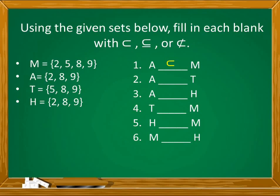Number 2, set A blank set T. Checking the elements of set A — 2, 8, and 9 — and checking set T which has 5, 8, and 9. Are all elements of A in T? No. So it is not a proper subset. Number 3, set A blank set H. The elements of A are 2, 8, and 9. Are 2, 8, and 9 present in H? Yes — they have exactly the same elements. So it is a subset.